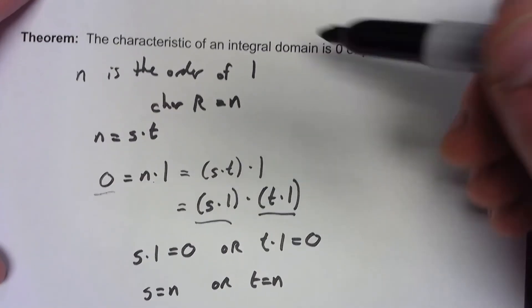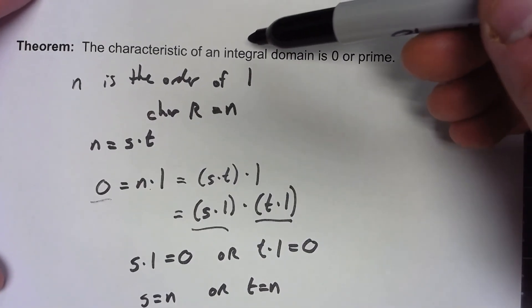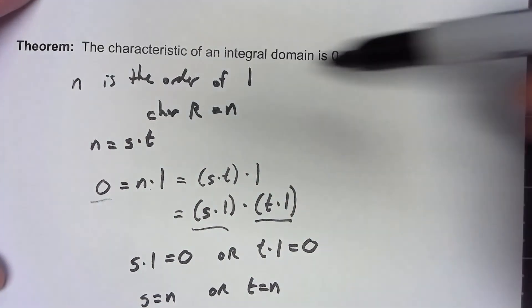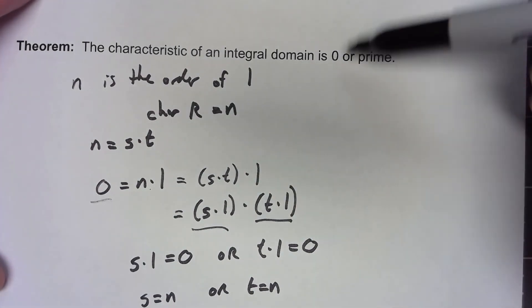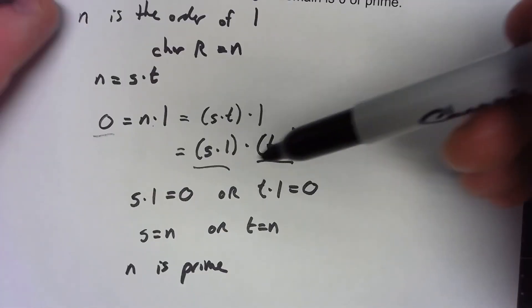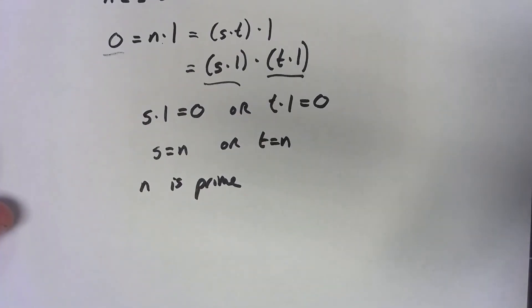So there we go. If we have an integral domain and we had a finite order, not that infinite characteristic 0, then n had to be prime.